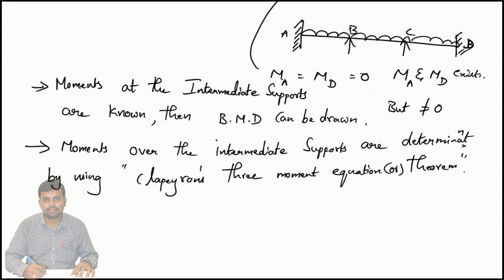So this was the introduction about the continuous beams. Simply, you can say a beam is a continuous beam if it is having intermediate supports and the beam is having more than two spans. Hope students you had understood up to this.